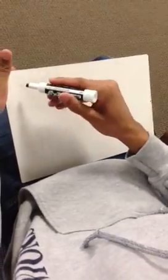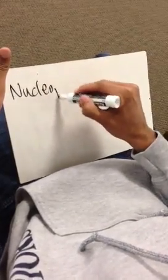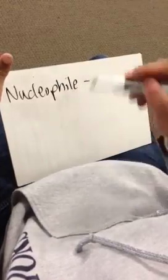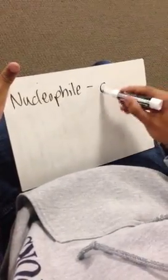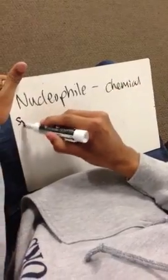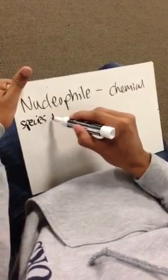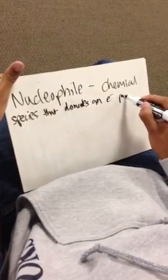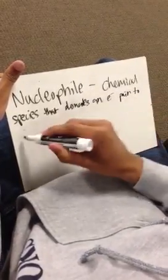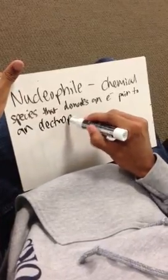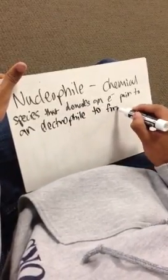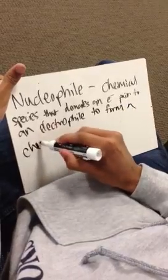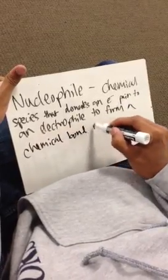So before I start, there are just some key terms that I would like for us to define. So what is a nucleophile? A nucleophile is a chemical species that donates an electron pair to an electrophile to form a chemical bond in a reaction.